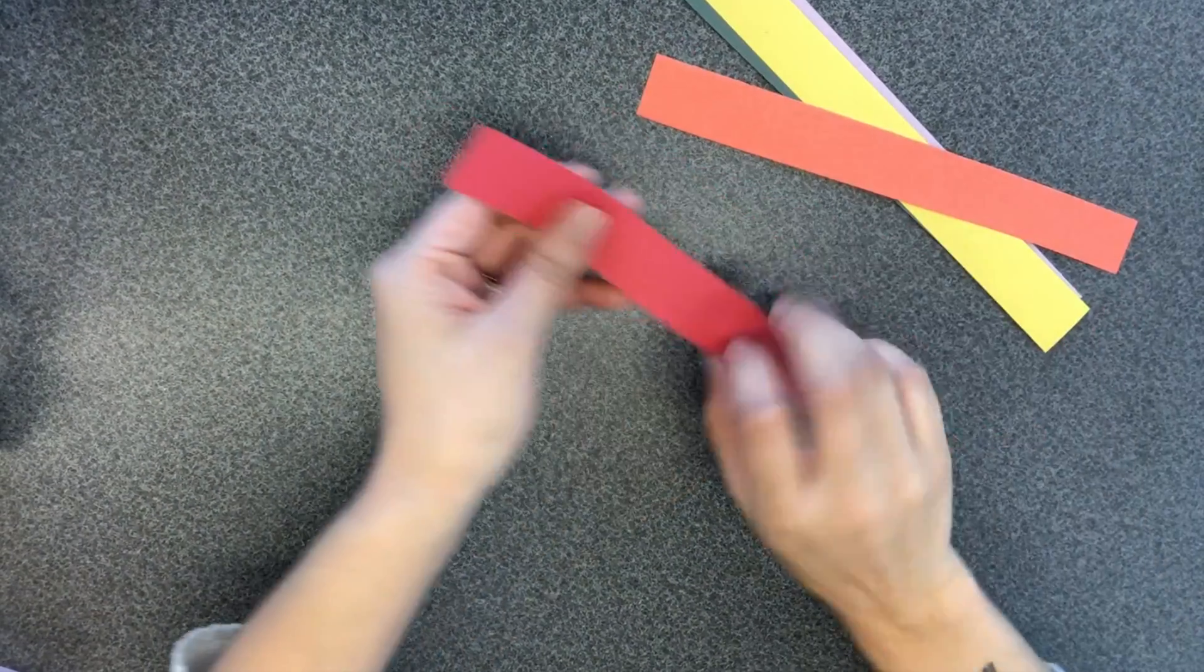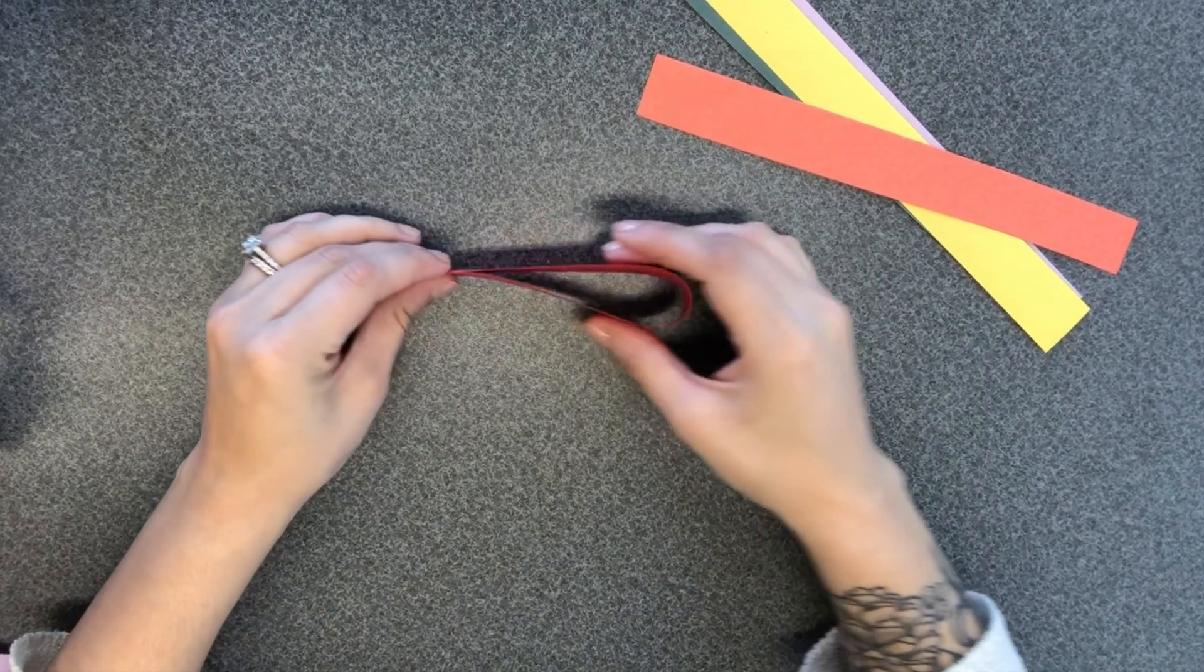And you want to make sure that your strips are in rainbow order. It makes it easier to go along. So that's red, orange, yellow, green, blue, indigo, violet.